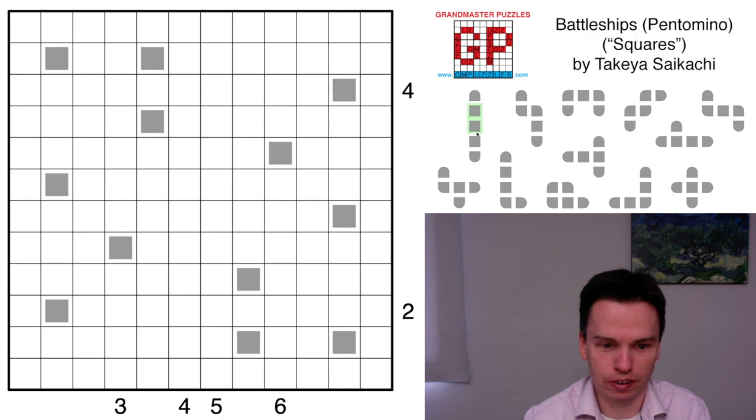There are a few pentominoes—the I, the L, and the Y—that have two squares in a four-long stretch. Then you have things like the T, but this T is effectively a square with three in a row.